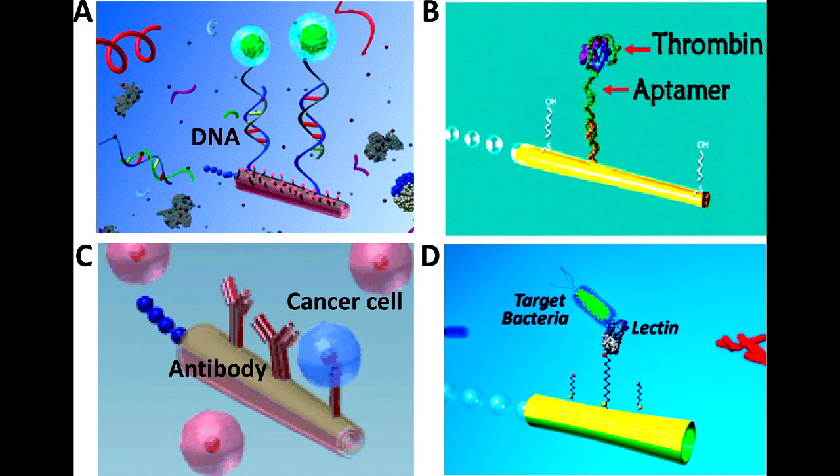And here we see receptor-functionalized micro-rockets for selective isolation of targets. First, nucleic acid. Then, protein. Then, a cancer cell. Then, finally, bacteria.